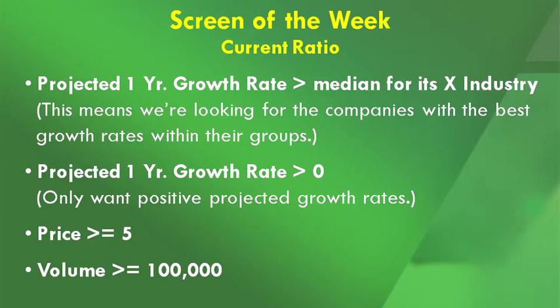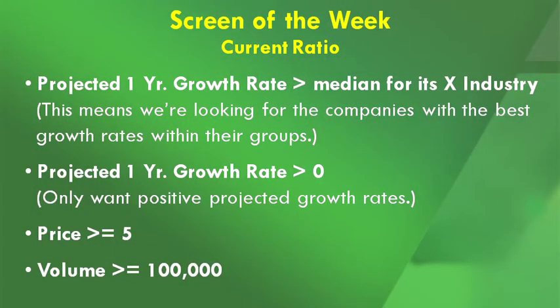We also want to make sure that growth rate is greater than zero. So if a group's growth rate is actually negative, a company won't get through — it has to be greater than the industry median but also positive. We're applying all of these to companies with a price greater than $5, and average volume greater than 100,000 shares traded on a daily basis.